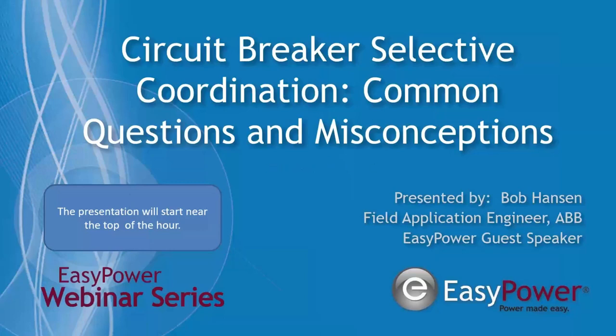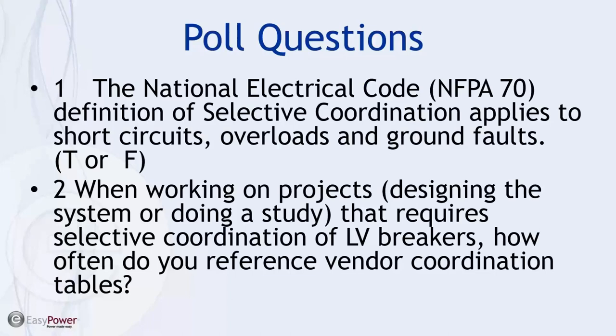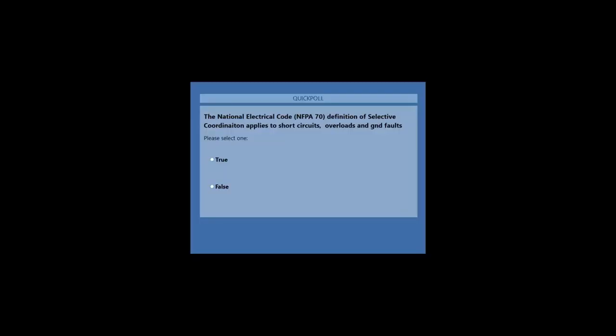That will give us some perspective as far as the audience leaning. Thank you very much. Without obligation or liability, we appreciate your helping us out with this poll question. The National Electrical Code has a definition of selective coordination that applies to short circuits, overloads, and ground faults — that is a true or false question. We will be doing a Q&A session at the end of the presentation, so feel free to enter questions in the question box of the webinar control system.